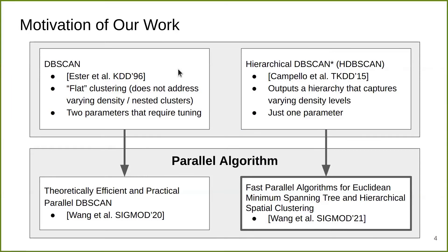Here's the motivation of our work. DBSCAN is very useful, but it only returns flat clusters, so it does not address varying densities and nested clusters in the dataset. It also has two parameters that require tuning. In 2015, Campello et al. proposes hierarchical DBSCAN*, which we'll call HDBSCAN for short. This algorithm outputs a hierarchy that captures varying density levels. The flat clustering extracted from this hierarchy closely resembles DBSCAN. This algorithm only requires one parameter, which requires less tuning.